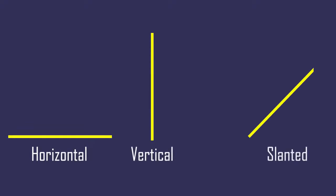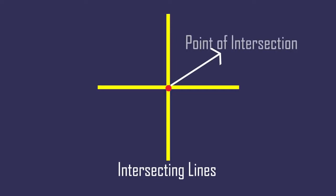When two straight lines intersect with each other at a point, then they are called intersecting lines, and that point where two lines intersect is called point of intersection.